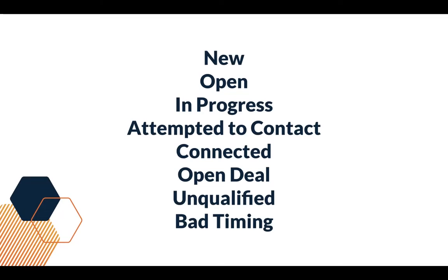For example, open can mean that a contact has just been assigned to a contact owner but they haven't started working the contact. In progress could mean that the sales rep is researching that lead but hasn't connected yet. And open deal, of course, would mean that the lead now has an associated deal. So it's really custom to you — you're given a bunch of different defaults but you can modify it to fit how your sales team runs their sales process.